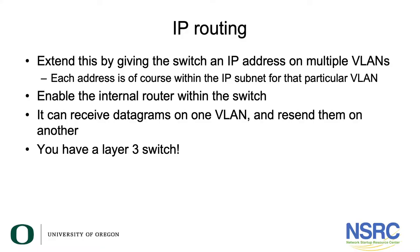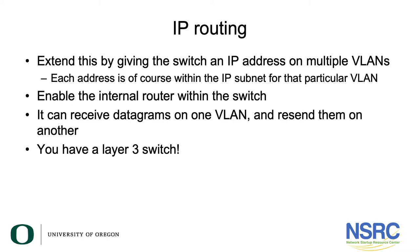Now, what about when we introduce IP routing? We want to extend this by giving the switch an IP address on multiple VLANs — each address within the IP subnet for that particular VLAN. To do this we need to enable the internal router within the switch. When we do that, it can receive datagrams on one VLAN and resend them on another. This answers the earlier question about how devices on VLAN 10 communicate with devices on VLAN 20 — we now have a Layer 3 switch, an Ethernet switch able to route packets between different VLANs.